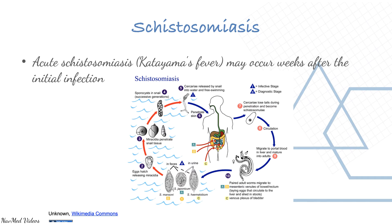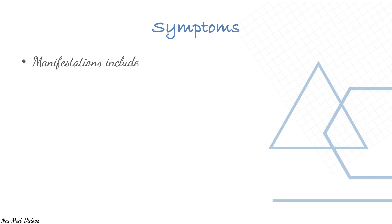The cercariae lose their tails during skin penetration and become schistosomulae, entering circulation and migrating to the portal blood in the liver, where they mature into adults. Paired adult worms then migrate to the mesenteric venules of the bowel and rectum, where they lay eggs that circulate to the liver and are shed in the stools.